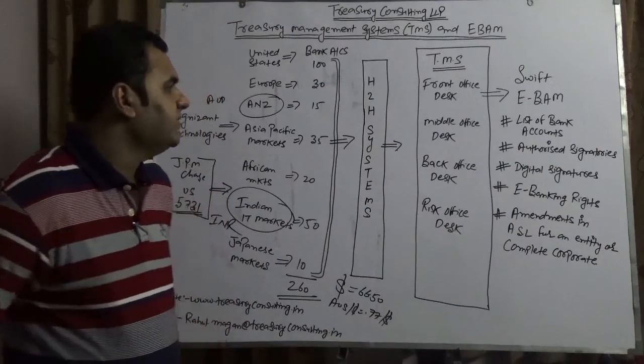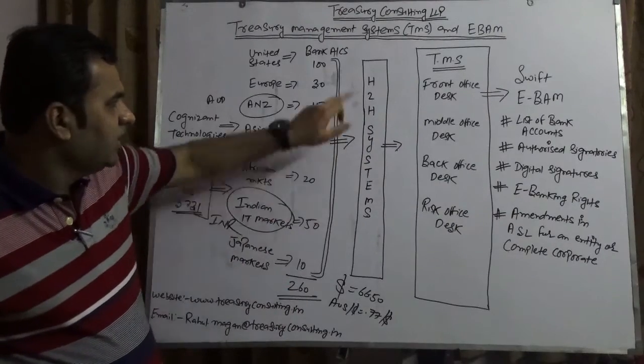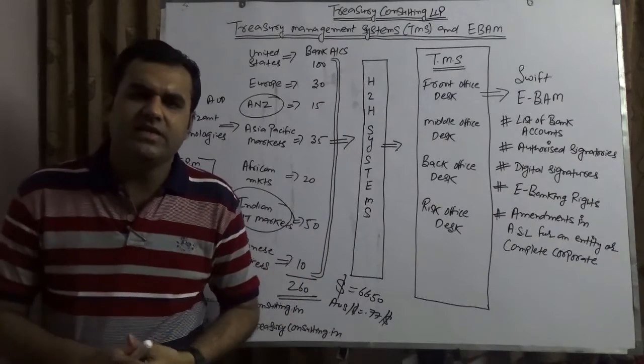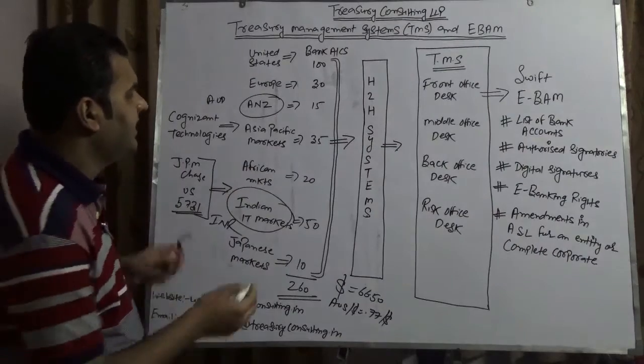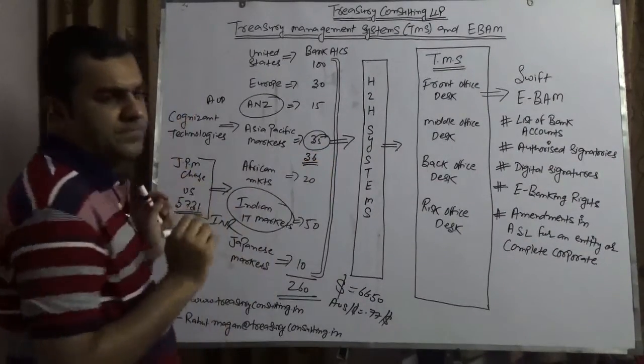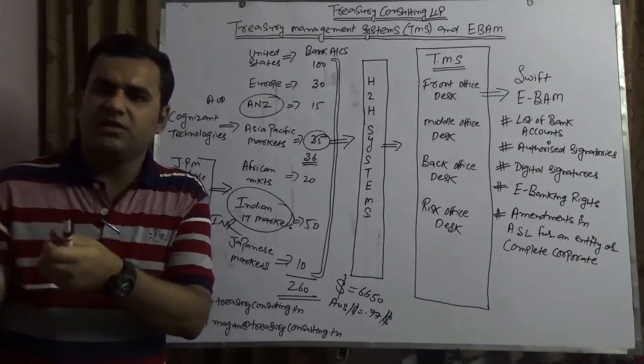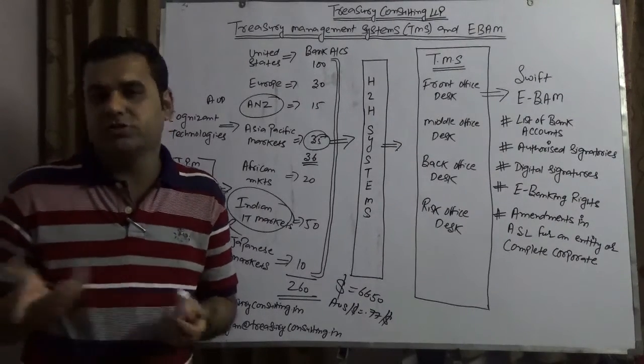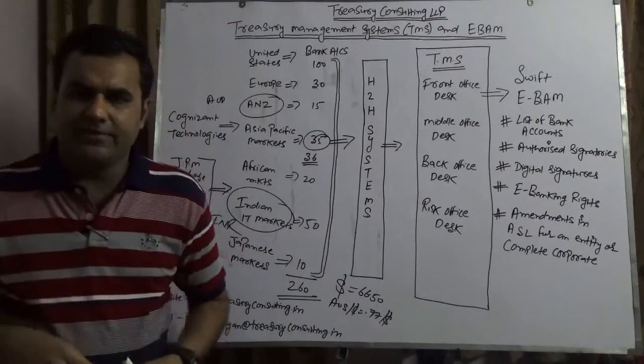Some companies are implementing fake technologies and I don't want to mention names. They are just implementing host to host and getting a statement which is MT940. Whenever you add any bank account, for example in Asia Pacific increasing from 35 to 36, you need to inform JP Morgan Chase and the long process starts again and you get MT940 on a notional basis. These companies are doing this and they're happy with that, but they never thought there's one more software.